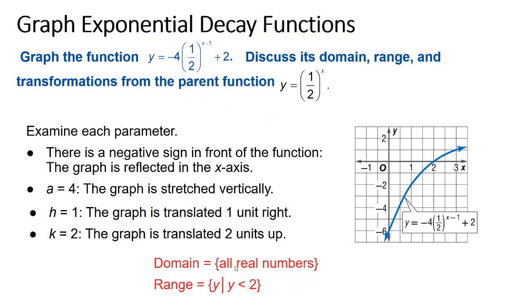The domain of this function is all real numbers. Any number can go in as the input for an exponential growth or decay function. And the range is all the y values that are less than 2. This function is increasing from negative infinity all the way up to positive 2, but it never quite reaches positive 2, because this first term, negative 4 times 1 half to the x minus 1, is always going to be a slightly negative number. So there's always going to be some small amount subtracted from 2. 2 is its limit.